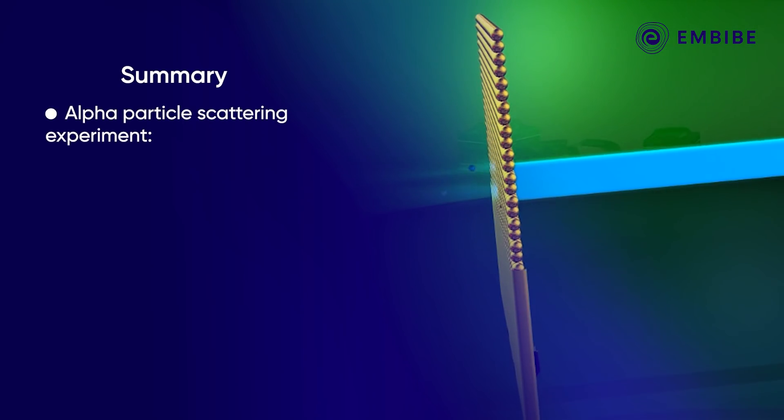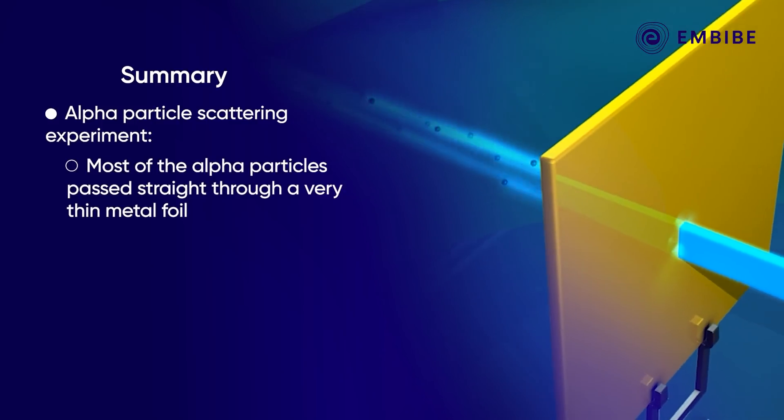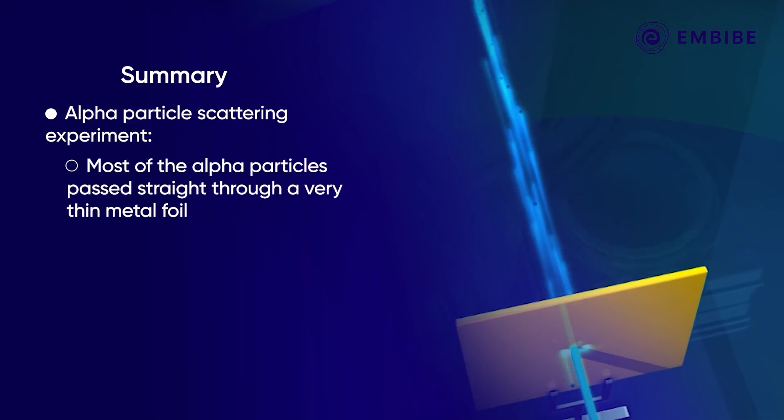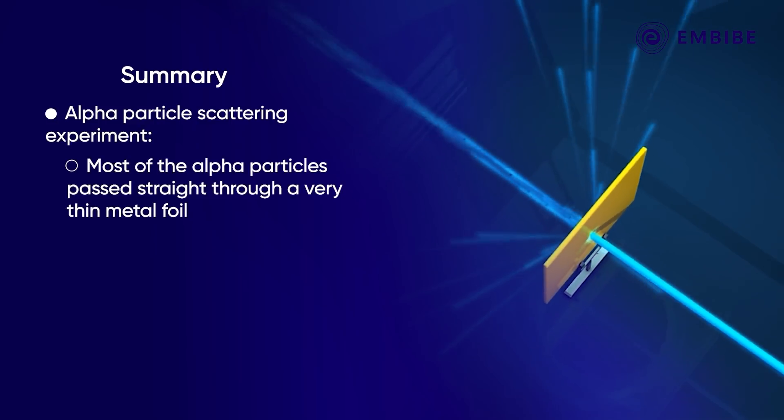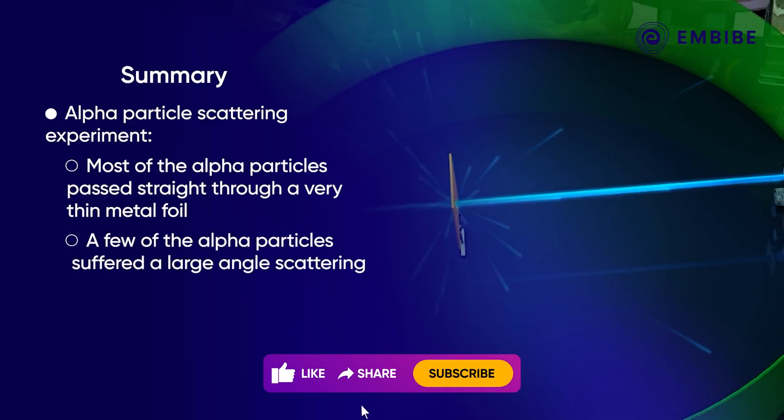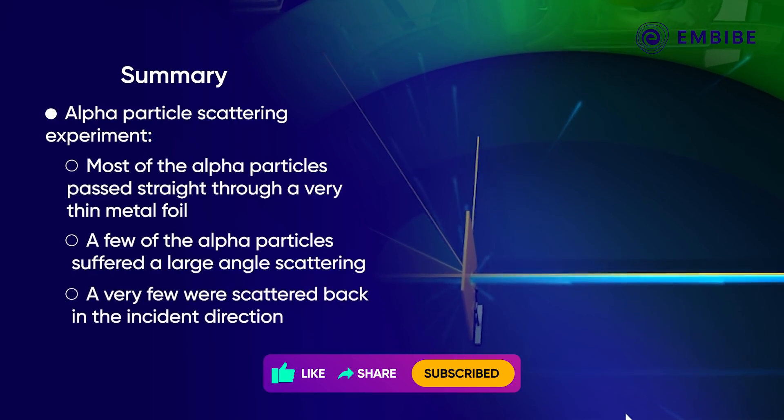However, during an experiment of alpha particle scattering, scientists observed that even though most of the alpha particles passed straight through a very thin metal foil, a few suffered large angle scattering while a very few scattered back in the incident direction.